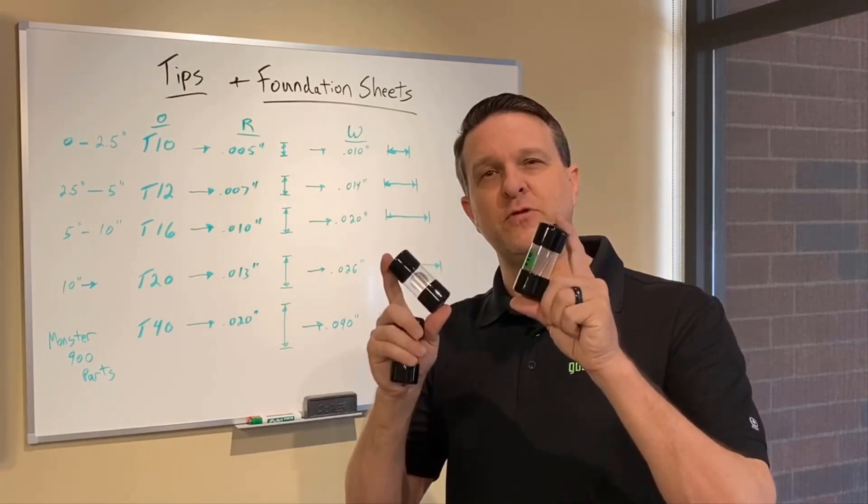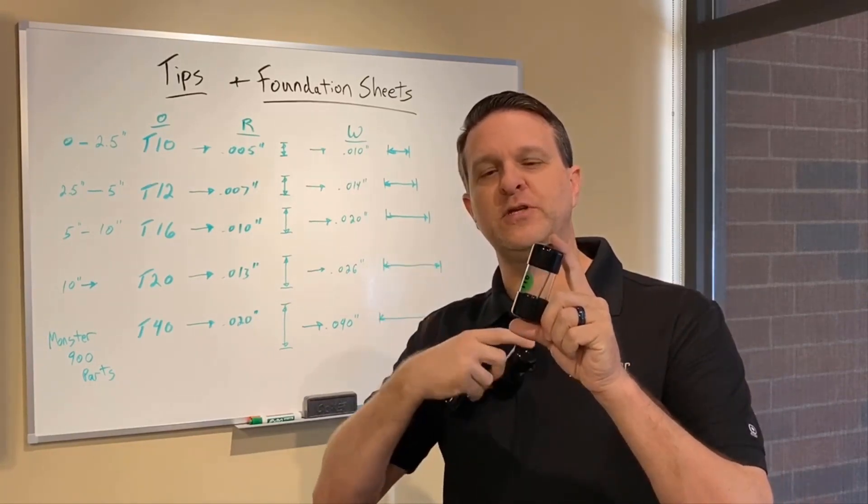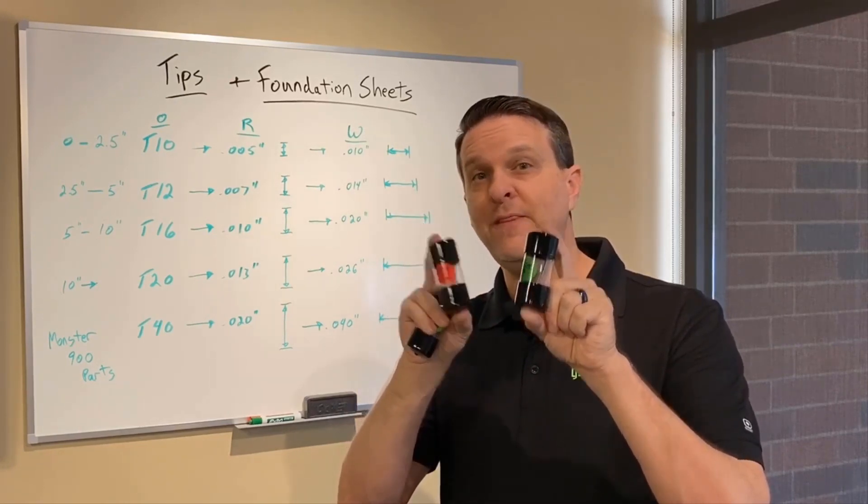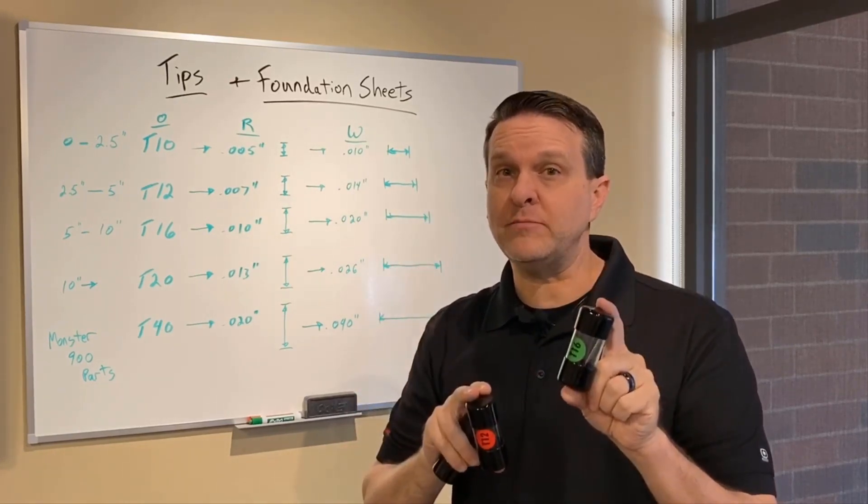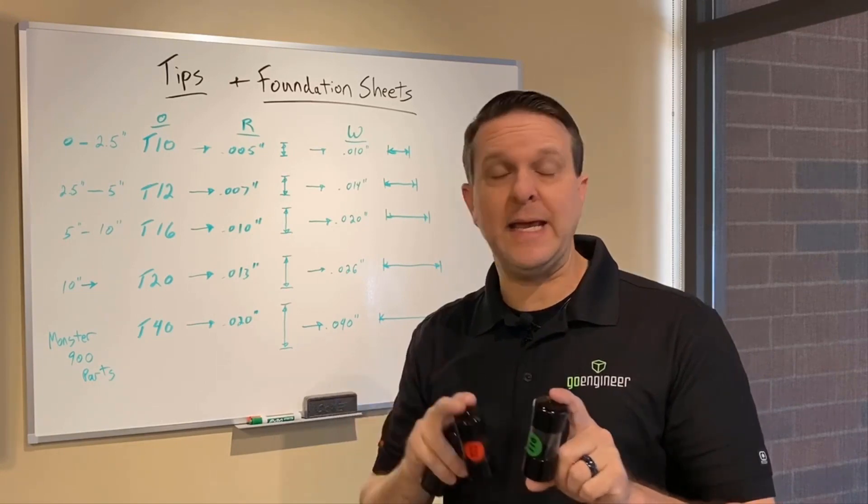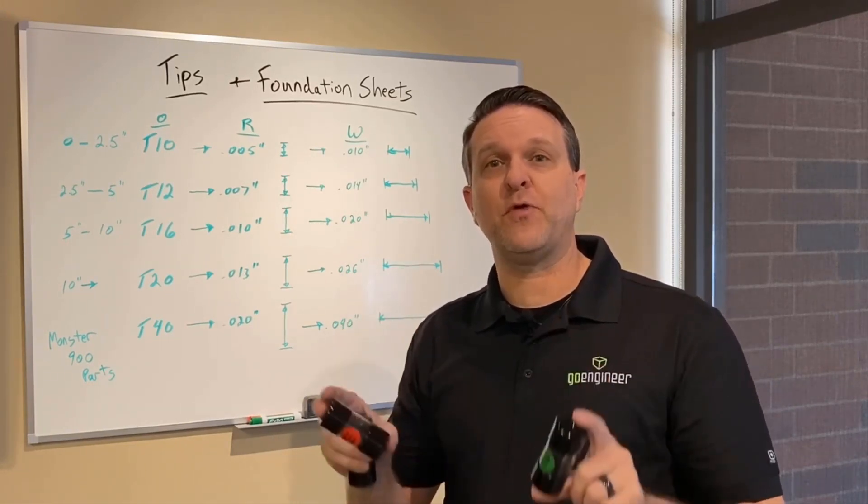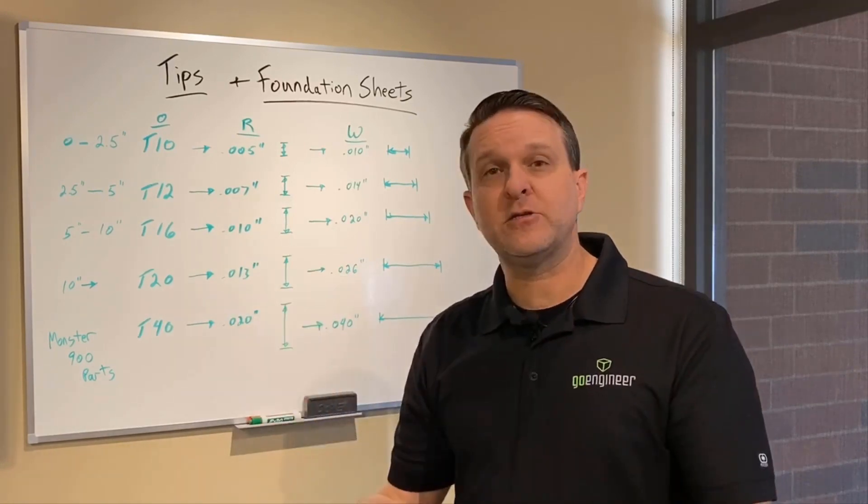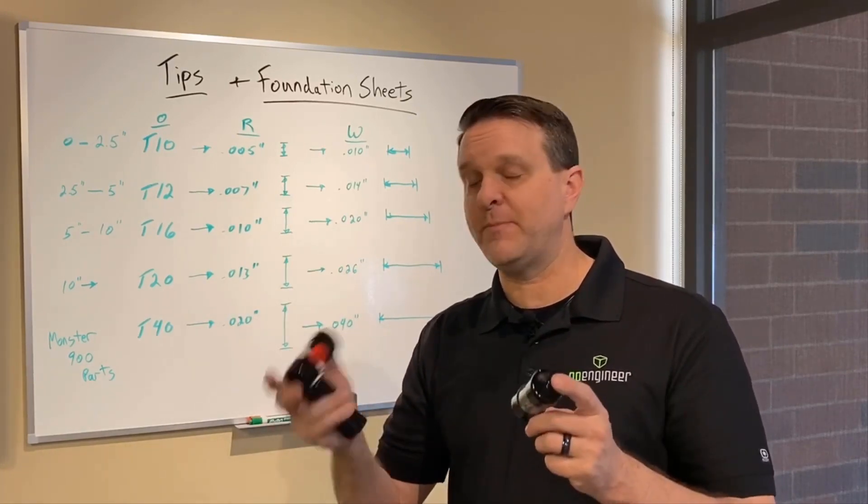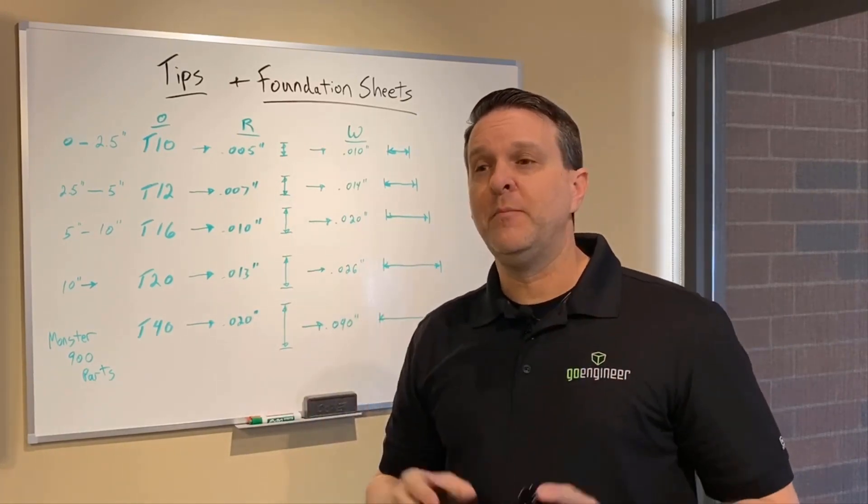But going back to the tips for a second, when you first get these, when you first get a T12 or a T16 tip, they can be used for Ultem, polycarbonate, ASA, it doesn't matter. Fresh tips can be used for any material. Look at the software package. It'll tell you if that will accept that tip combination. But it can be used for anything.